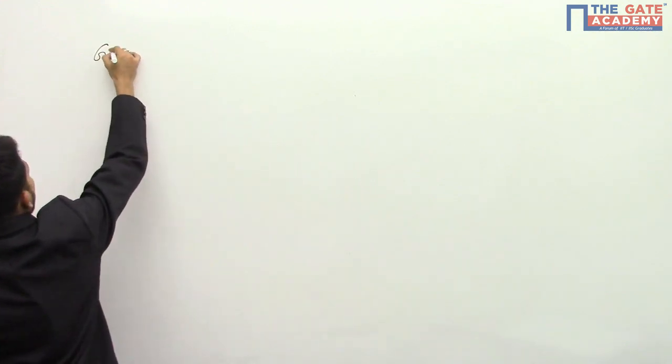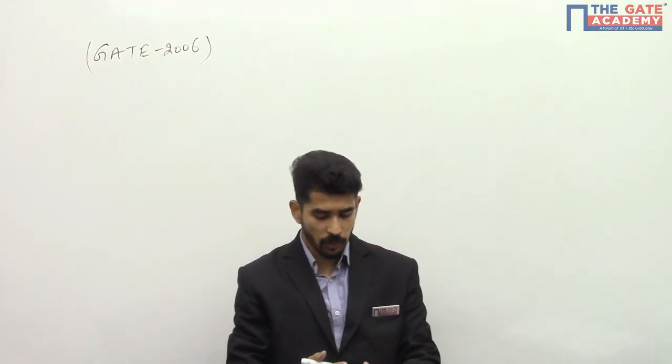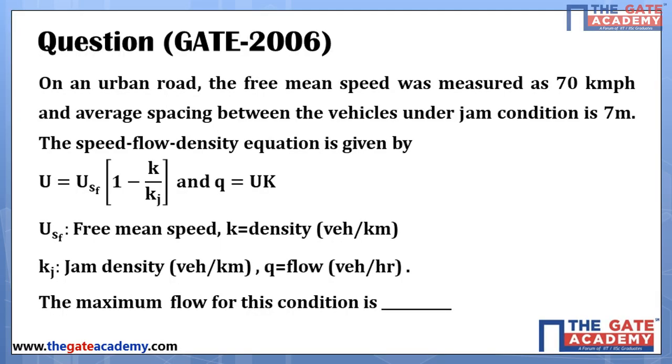I am taking an example of transportation engineering. The question was asked in GATE 2006 from traffic engineering. The question said on an urban road the free mean speed was measured as 70 kmph. So free mean speed is equal to 70 kmph, and average spacing between the vehicles under jam condition is 7 meters. So spacing equal to 7 meters.